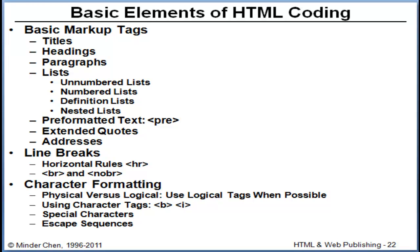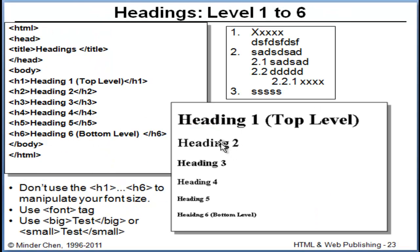Let's introduce some basic elements for HTML coding. We've covered headings and how to create a paragraph and a list. Headings H1 through H6 are section headings or section titles. For instance, if you have three main sections, you should use H1. If you have a subsection like 2.1, you should use H2. For a sub-subsection like 2.2.1, use H3. The browser decides the font and size for each heading level.